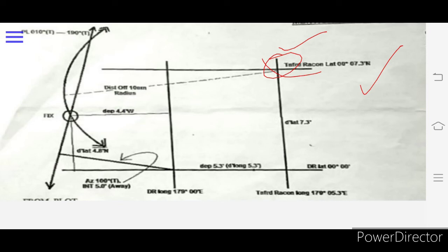We are taking 10 nautical miles as a radius and drawing a circle. Now as per the question, at 1800 we got another position with DR longitude 179° and DR latitude 00°00'. From here, my azimuth was 100 degrees.